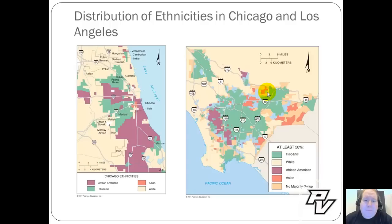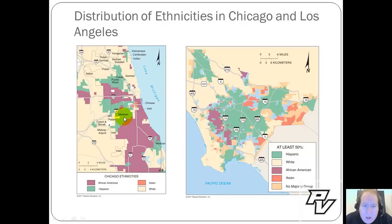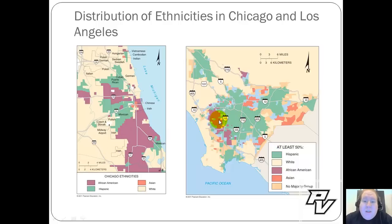We can still see this when we look at ethnicities in Chicago and Los Angeles. In Chicago there's a large population of African Americans especially on the South Side, but also many other groups — Hispanics of Mexican, Puerto Rican, and Cuban origin, Asian and Eastern European descent — with major clusters in specific areas. In Los Angeles, further east in what's known as East Los Angeles, there's a much larger concentration of Hispanics, showing a clear clustering effect in major cities.